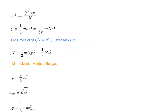Now the pressure is equal to (1/3) × m × n × v̄², where n = N/V. So we can write P = (1/3V) × m × N × v̄². For one mole of gas, N = Nₐ (Avogadro's number), so PV = (1/3) × m × Nₐ × v̄² = (1/3) × M × v̄², where M is the molecular weight of the gas.